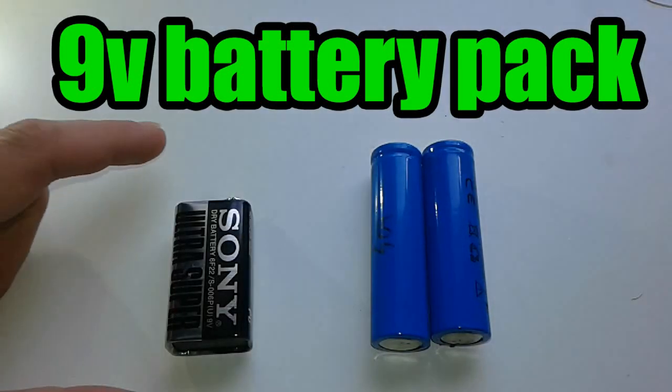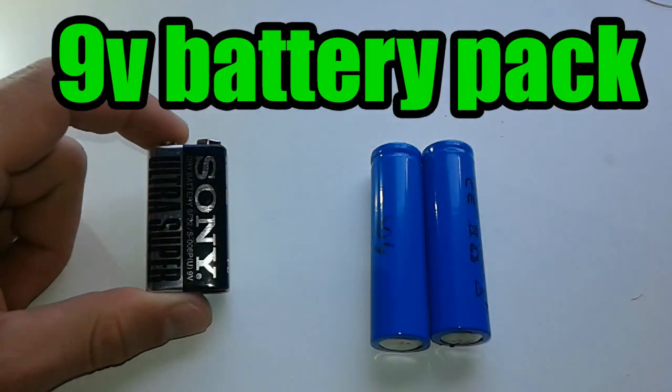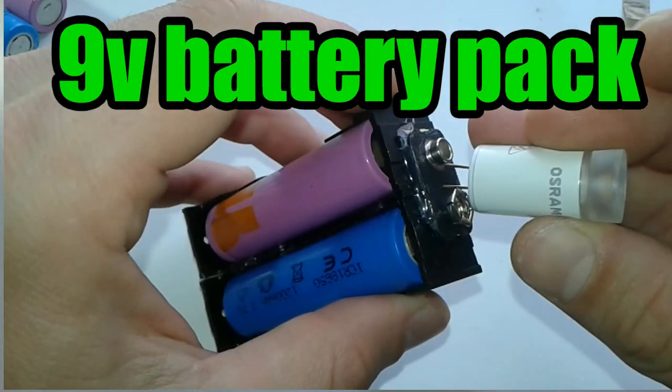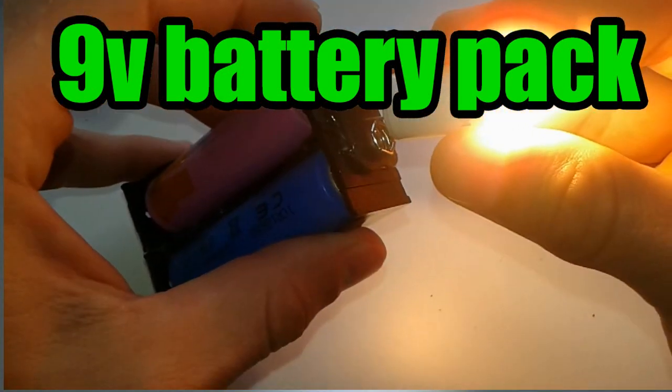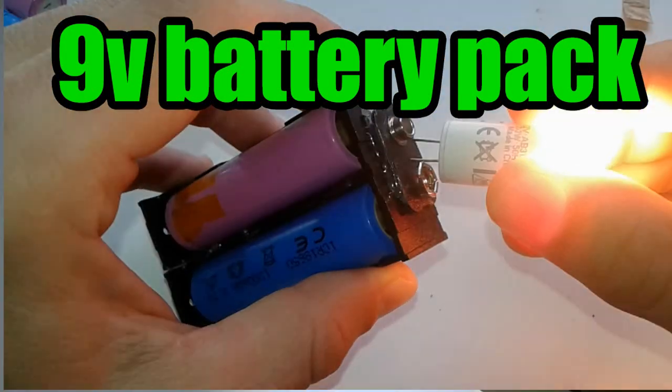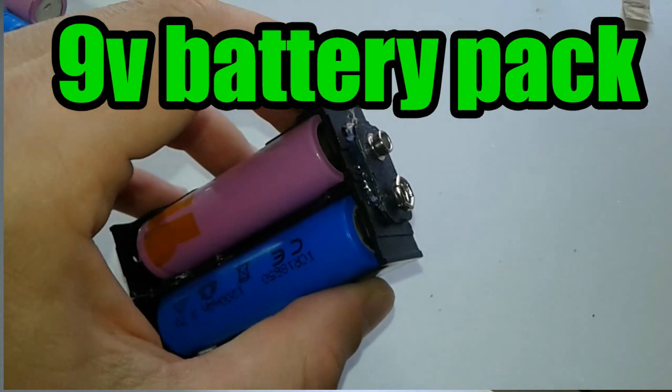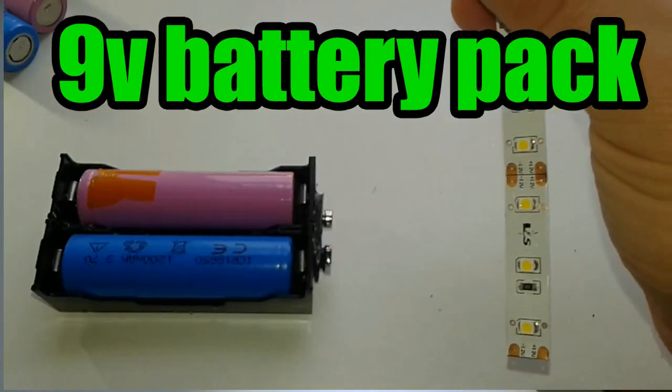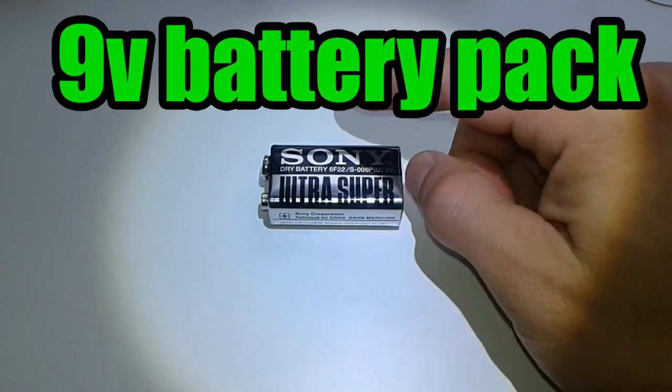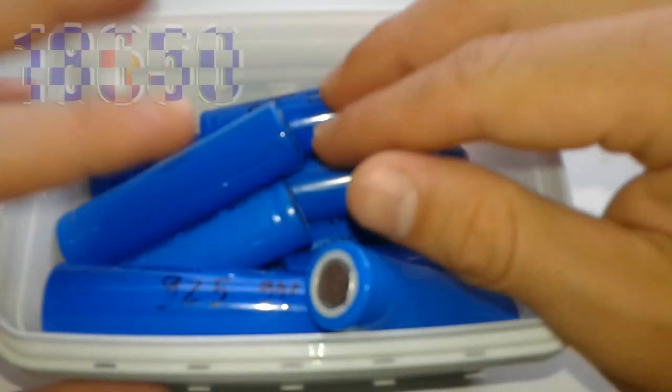I'm going to present you today how to make a 9-volt battery pack rechargeable using 18650 cells, so let's get started. Everybody knows what a 9-volt battery should look like—it's got around 9 volts and is used in lots of applications. Today we're going to build one using 18650 cells.